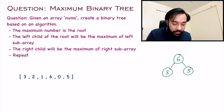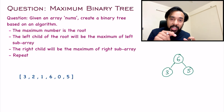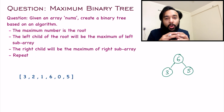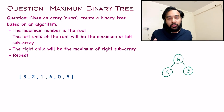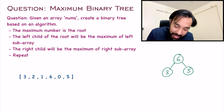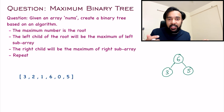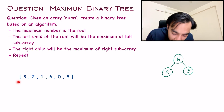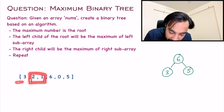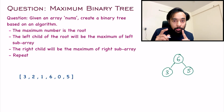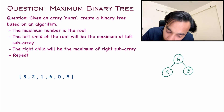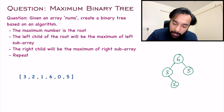Moving on, you have to repeat the same algorithm again and again until you exhaust all of the elements of your array. After 3 you have to find its left and right sub-children. You don't have anything on the left, but on the right you have 2 and 1 — out of them 2 is greater, so 2 will be the right sub-child of 3. Similarly you get a 1, and the left sub-child of 5 will be 0.